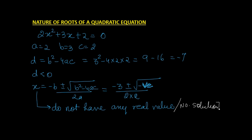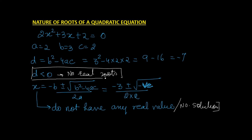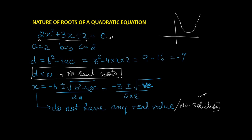When D is less than 0, the nature of the roots is that there are no real roots. Graphically, the curve does not intersect the x-axis at all — in none of the scenarios does it actually cross the x-axis. There is no value of x which gives zero, and hence there are no real solutions when D is negative.